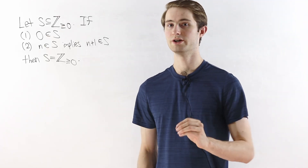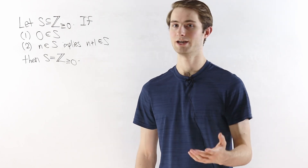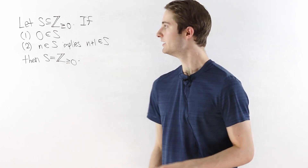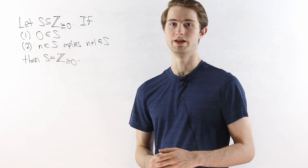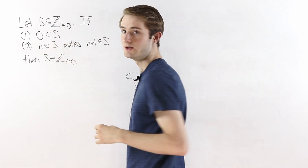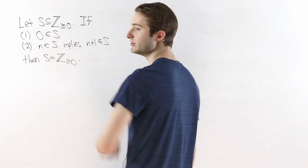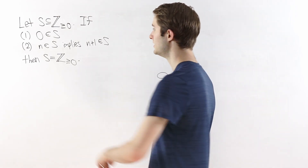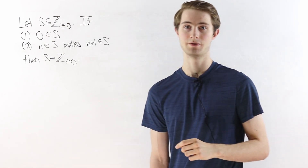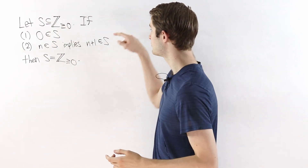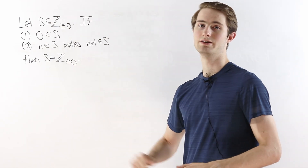We are going to talk about proof by induction on the real numbers. You might have seen proof by induction being done on the natural numbers or the integers. In that case we talk about it like this: let S be a subset of the non-negative integers. We want this set S to satisfy two conditions. The first condition is that zero is inside of the set, and the second condition is that if n is in the set then n plus one is also in the set. If S satisfies both of these conditions then S in fact contains every non-negative integer.